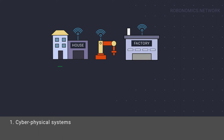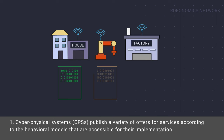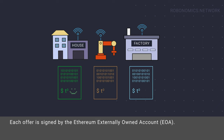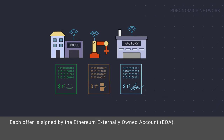Cyber-physical systems publish a variety of offers for services according to the behavioral models accessible for their implementation. They attach economically important information — price and existence time of offers. Each offer is signed by the Ethereum externally owned account.